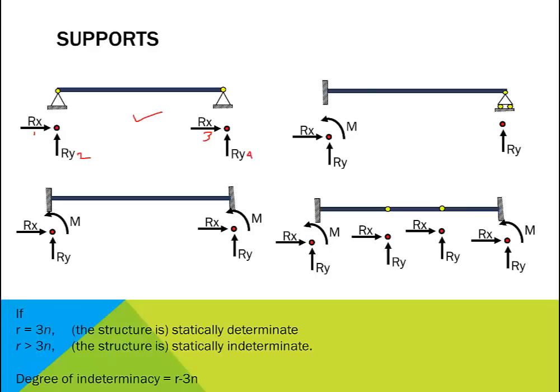Similarly, a beam with a fixed end and a roller support has four unknown support reactions, and it is also indeterminate. When we have four unknowns, we need one extra equation to solve the problem and work out all the support reactions, so the beam is said to be one degree indeterminate.